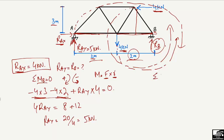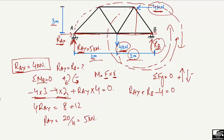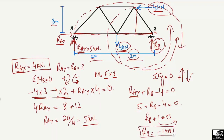Taking the summation of vertical forces equal to zero, with upward forces positive and downward forces negative: RAy is an upward force, RB is assumed upward, and the 4 kilonewton load is downward. The horizontal load is not a vertical force so it is excluded. Substituting RAy equals 5 kilonewtons: 5 plus RB minus 4 equals zero, giving RB plus 1 equals zero, so RB equals minus 1 kilonewton. The negative sign shows our assumed direction for RB was wrong, so we must reverse it.